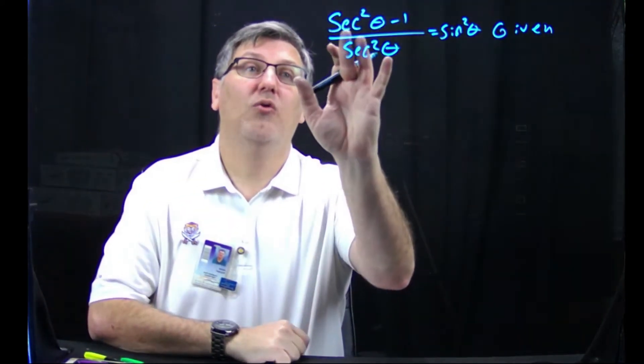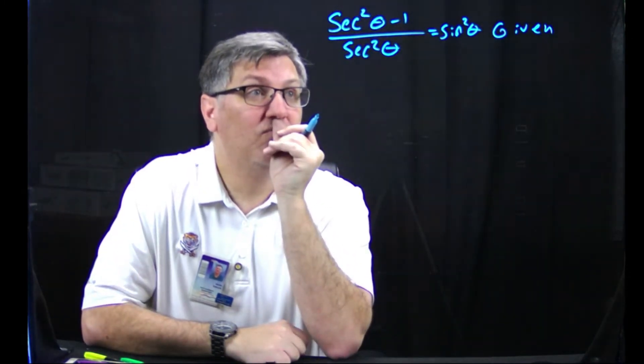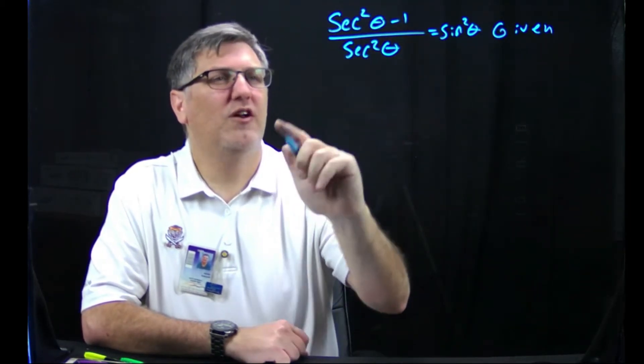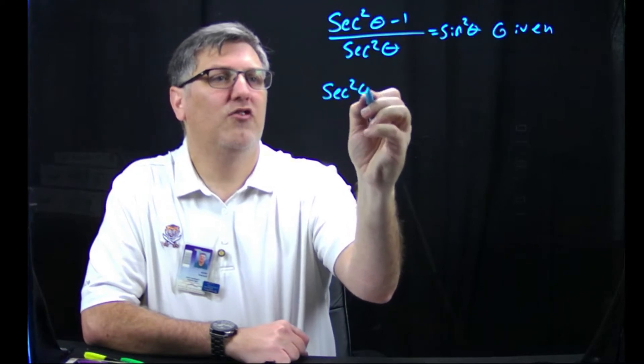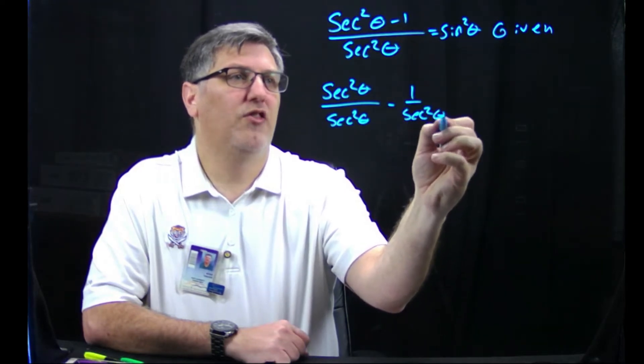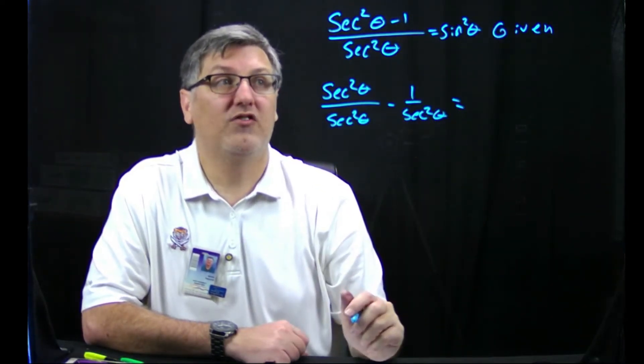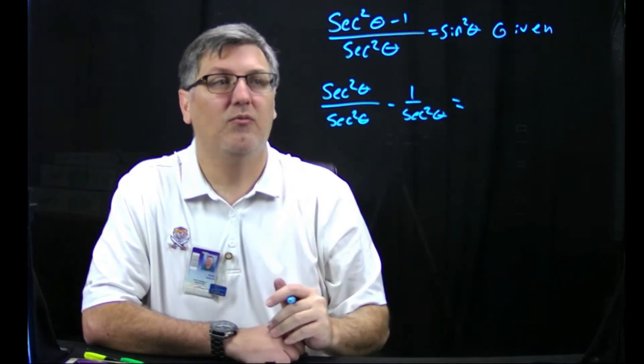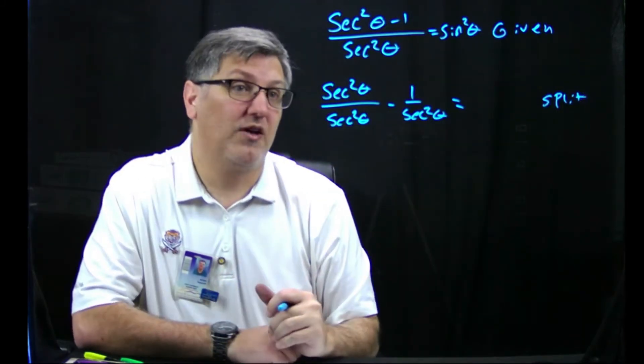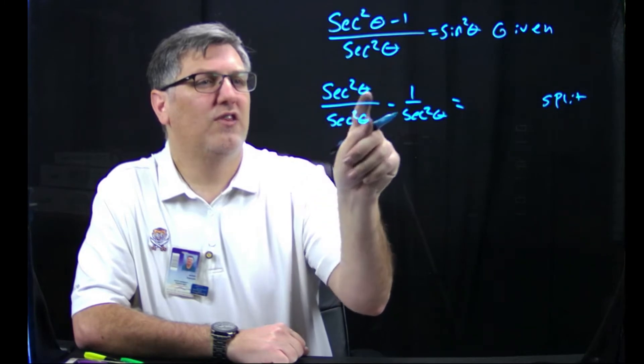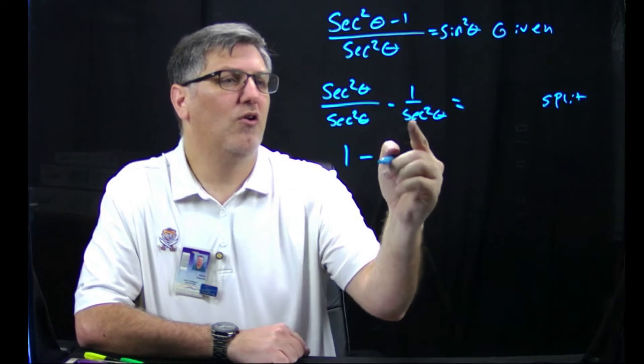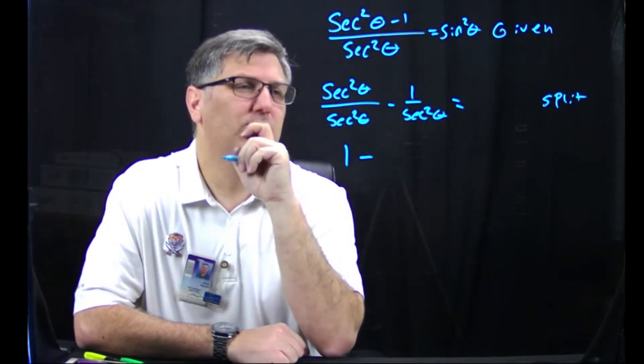I know sec²θ - 1. Let's split this up because I can split this into two different fractions. I could say sec²θ over sec²θ minus 1 over sec²θ. You don't have to keep writing the sine squared, just write the equals and that implies that this keeps coming down. All I did is I just split things up. Now sec²θ divided by sec²θ, that's one.